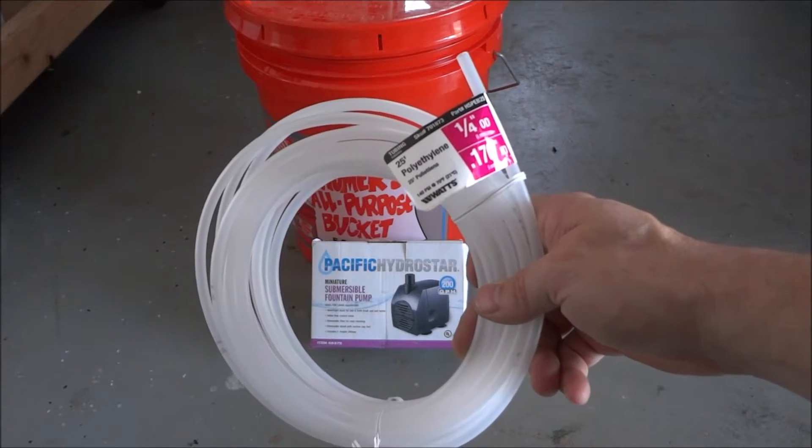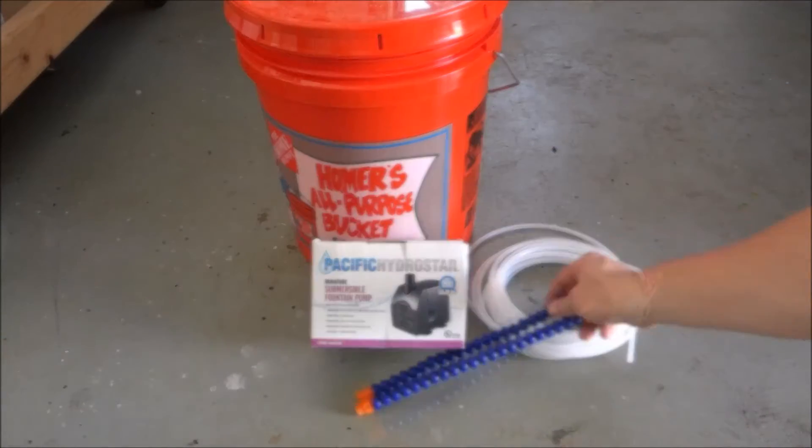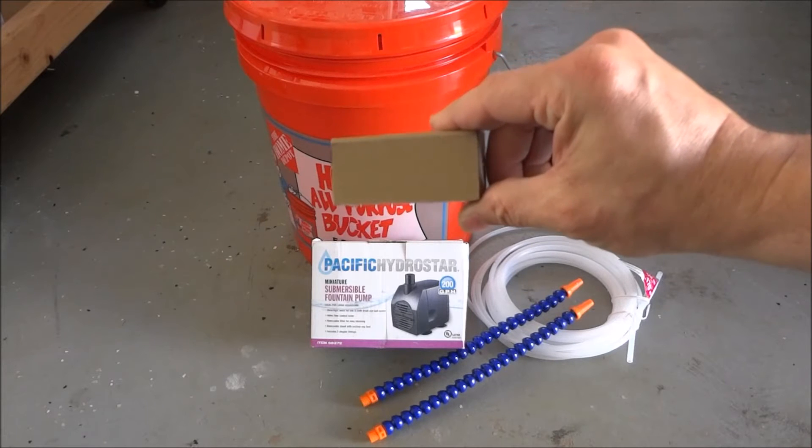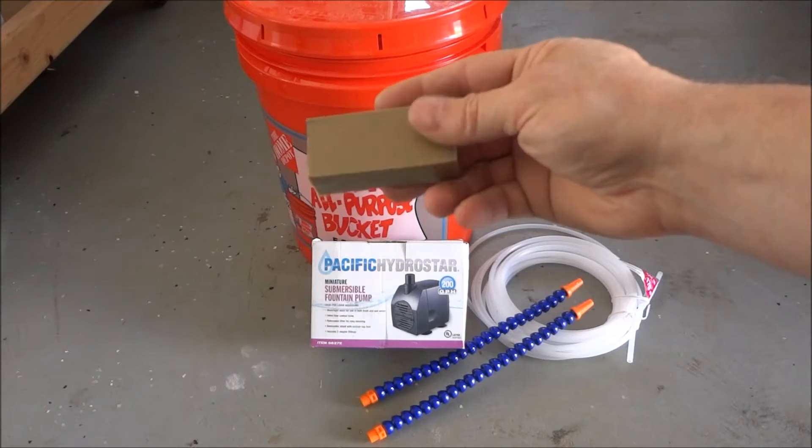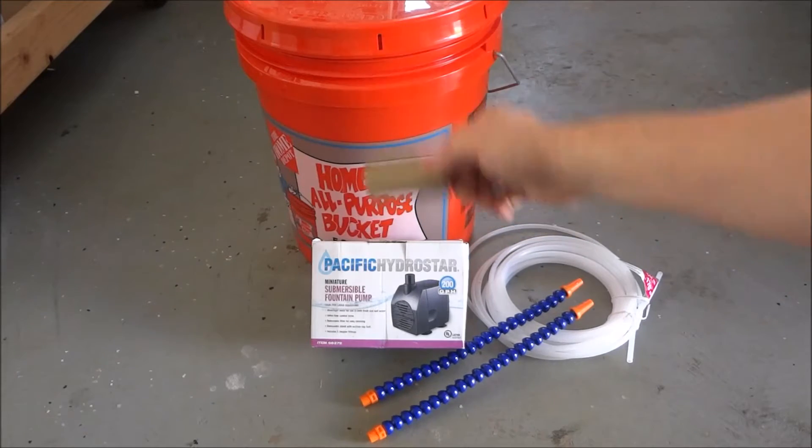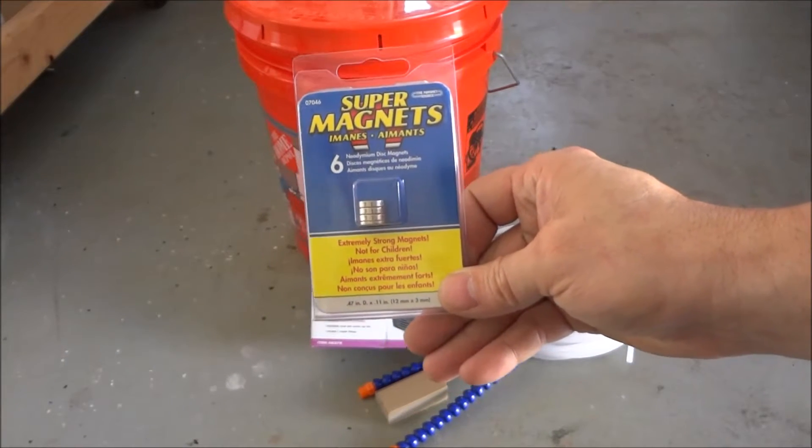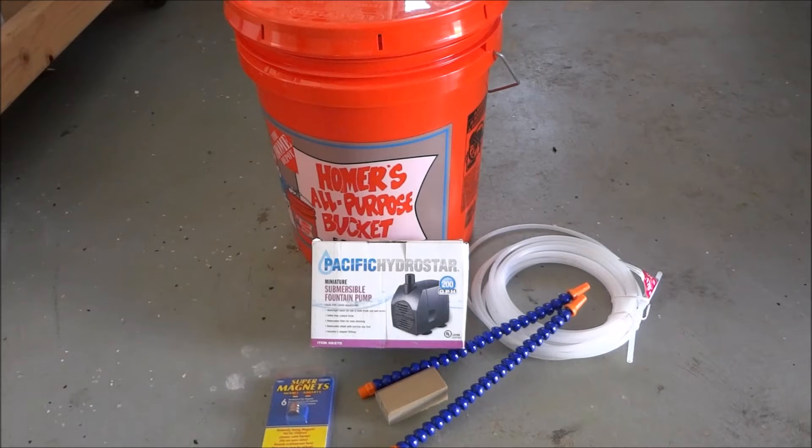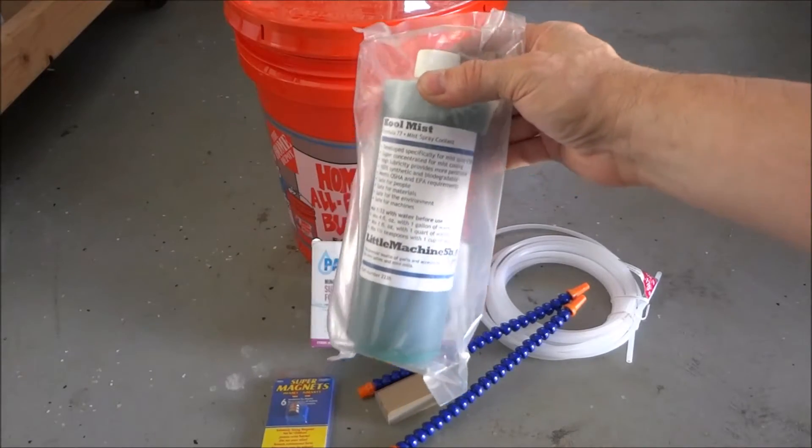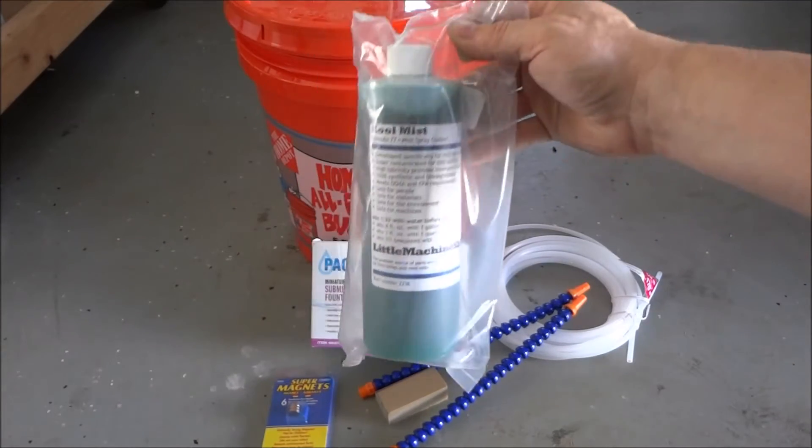The next items: some quarter inch polyethylene tubing, a line lock, some type of material to connect everything together which will also be our base - this is some plastic but you could use aluminum, some super magnets to hold the base in place, and of course we're going to need some kind of coolant. I'm going to give this Cool Mist a try. This will mix up four gallons. I'll probably mix a couple gallons at a time.